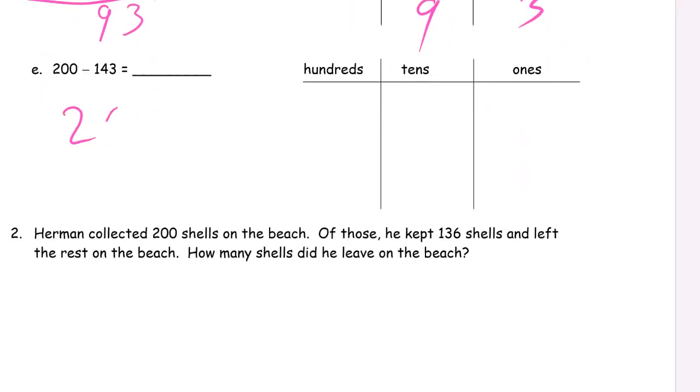200 minus 143. Here we go. Unbundle a 100. Get 10 tens. Unbundle a 10. 9, 10 left. But we get 10 ones. 10 minus 3 is 7. 9 minus 4 is 5. Oh, we still have that 100 left. One of those hundreds is still left. But we subtract it, so it's gone. Now we'll see. You could write a 0 here if you wanted, or leave it out.